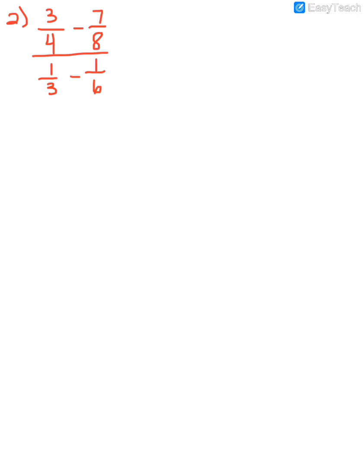Don't get overwhelmed — we're just going to deal with the top first. If I look at 3 fourths and 7 eighths, they're being subtracted, so I have to get a common denominator. I can't add or subtract fractions unless they have a common denominator. The least common denominator between 4 and 8 is 8. So I'm going to multiply the first fraction, both numerator and denominator, times 2. That gives me 6 over 8 minus 7 over 8, and putting those together gives me negative 1 over 8.